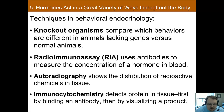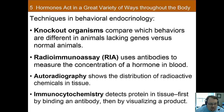Immunocytochemistry can also be used to determine where hormone receptors are found. In this method, antibodies are added to slices of brain tissue and researchers look at where the antibodies bind. Autoradiography and immunocytochemistry are similar in that they're both looking for where hormone receptors are in brain tissue. The difference is that in autoradiography, you're injecting a substance before the animal is sacrificed, whereas in immunocytochemistry, that is done after.